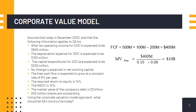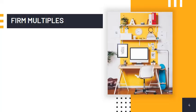From the $10 billion we deduct the market value of debt amounting to $3 billion dollars to get the market value of common stock amounting to $7 billion. We divide it by 2 billion shares and we get the market value per share of $35 dollars. Another way of valuing stocks is through firm multiples, which is consistent with the relative valuation approach as it uses multiples of comparable firms to value a company's stock.